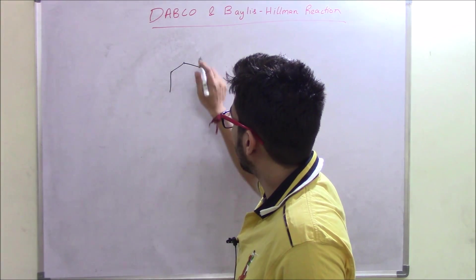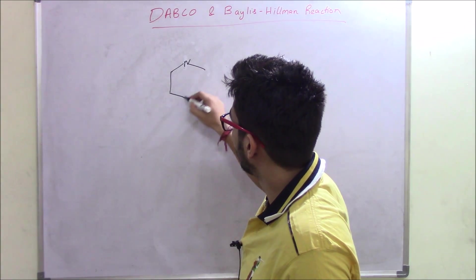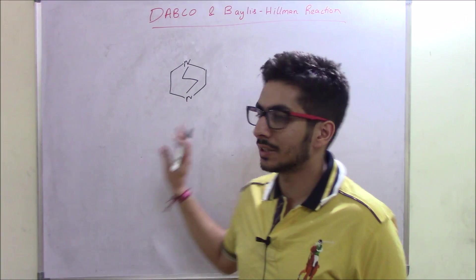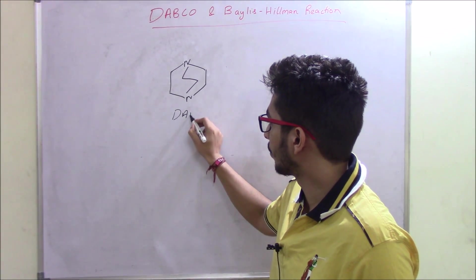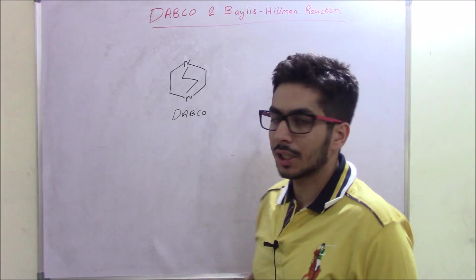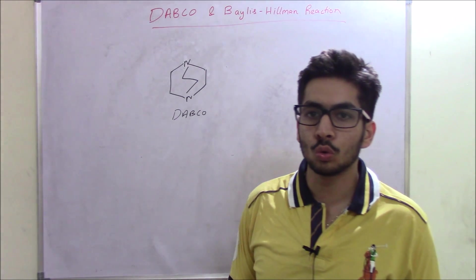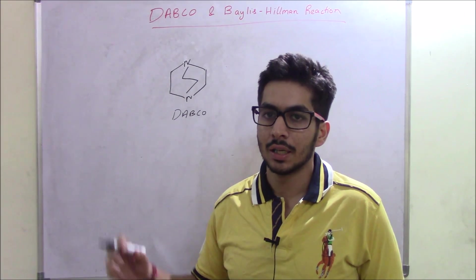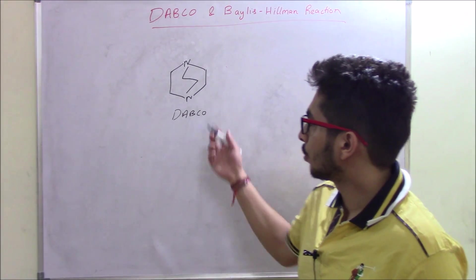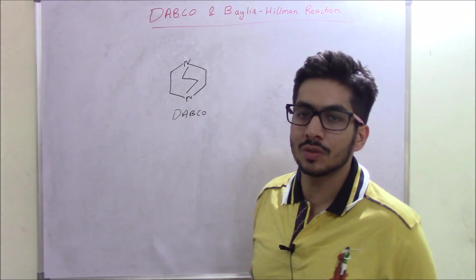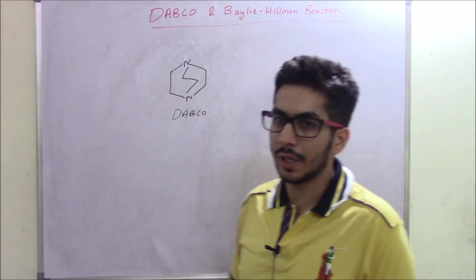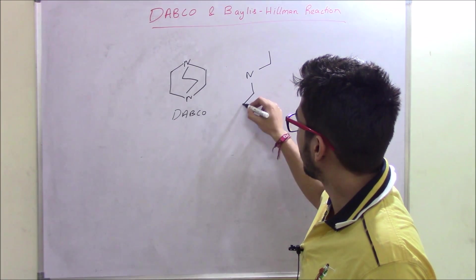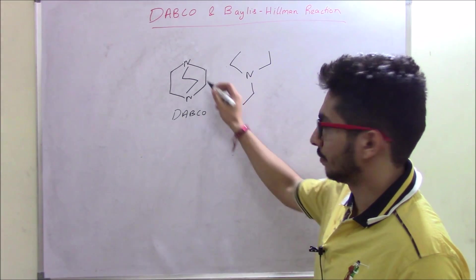First, talking about DABCO — DABCO has this kind of structure where we have nitrogen, two carbons in between, and another nitrogen. It's a fancy-looking structure. The IUPAC name of DABCO is 1,4-diazabicyclo[2.2.2]octane. As you can see, there are two nitrogens in DABCO, and it generally acts as a base.